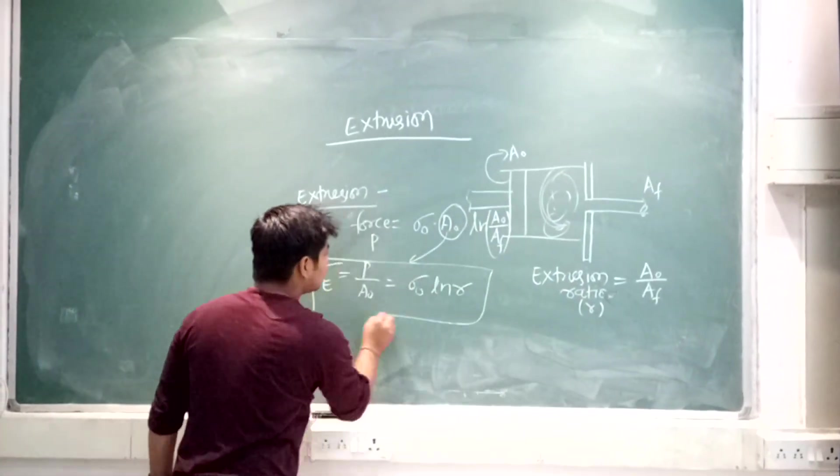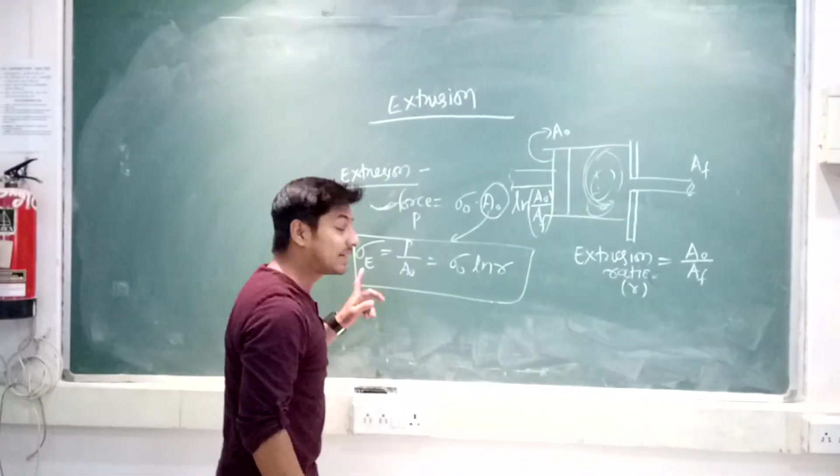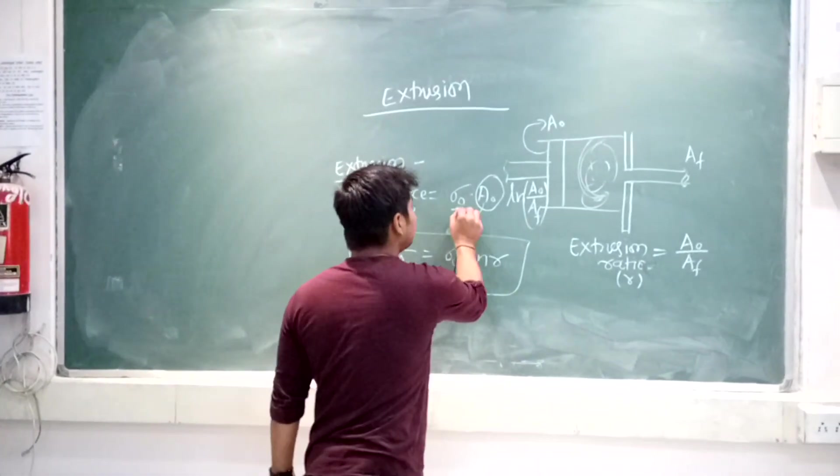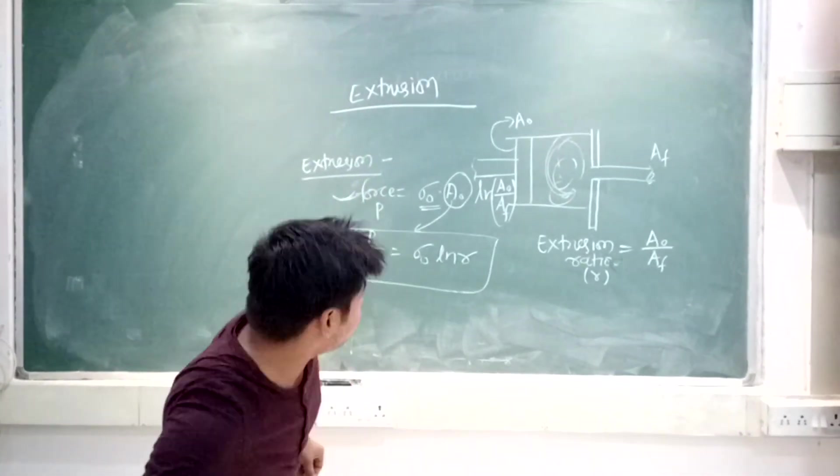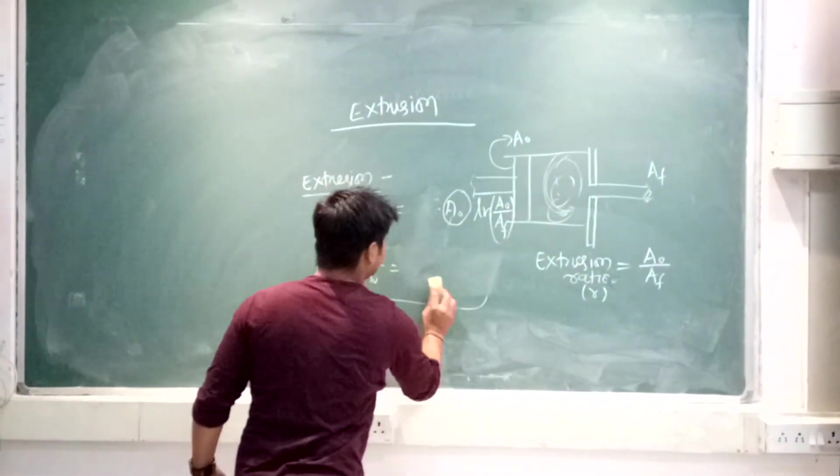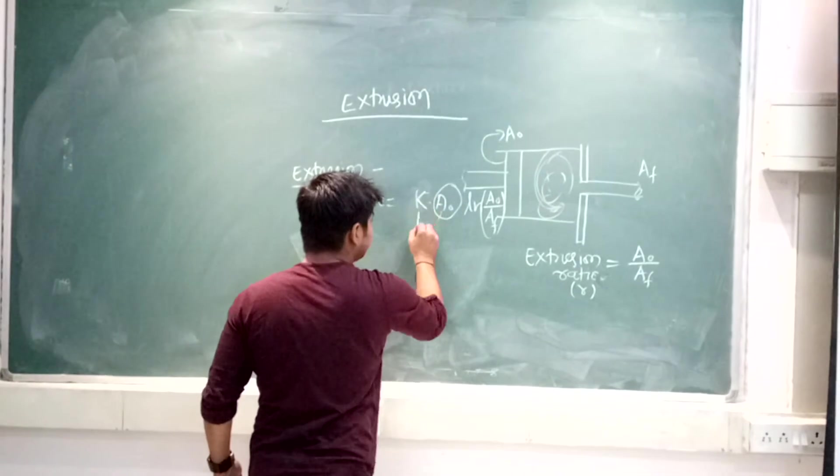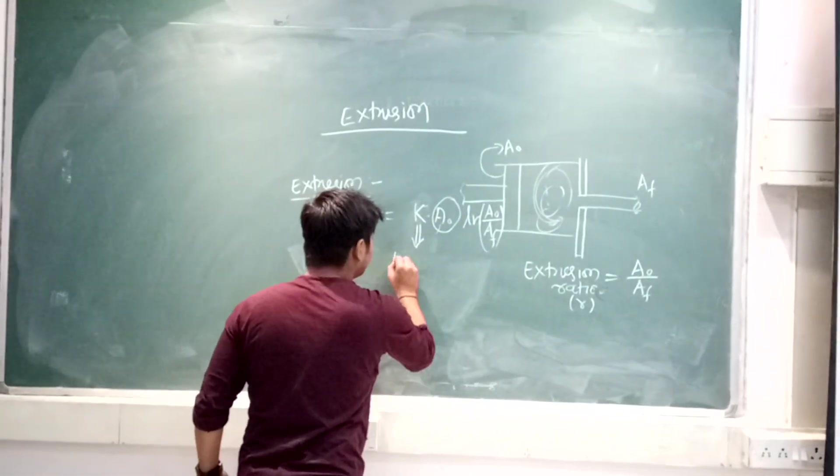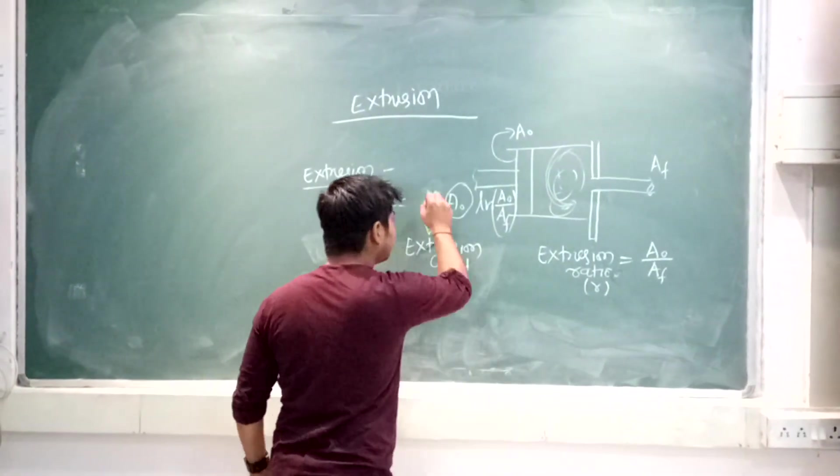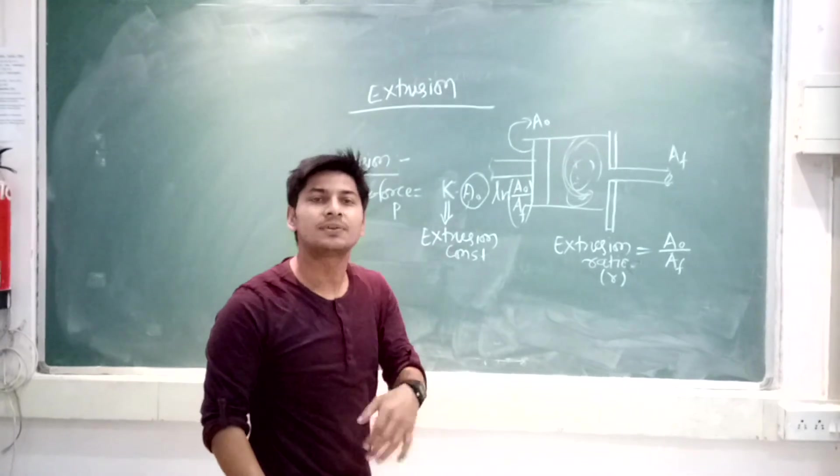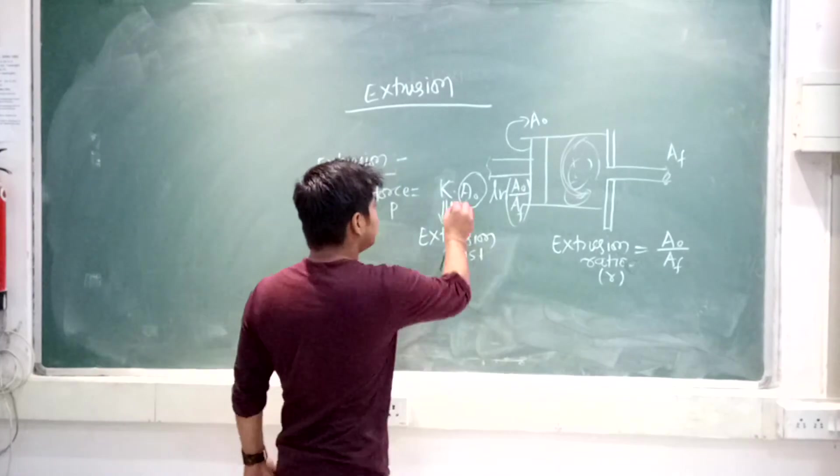One possibility they can ask about the extrusion load, another possibility they can ask about the extrusion stress. If sigma naught is given, you have to go with this formula. Otherwise, in place of sigma naught, they can give you k, the extrusion constant. This is the extrusion constant. The unit of extrusion constant is same as that of strength or flow stress, the unit of stress.